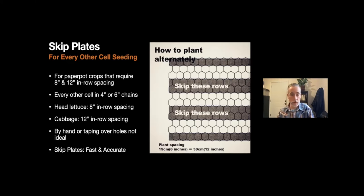You can do this obviously by just doing it by hand, which is going to take quite a bit of time and negate your whole time-saving paper pot system. Or you can also tape over the holes that would allow you to get every other cell, but that does take time as well and it's not as accurate, and there's just issues that go along with it.